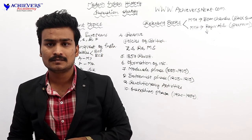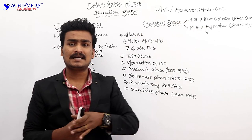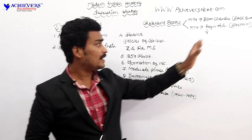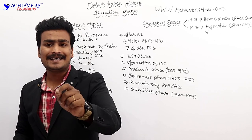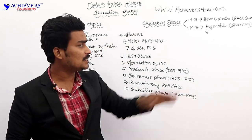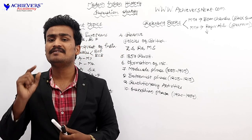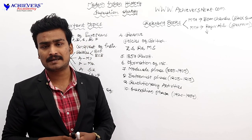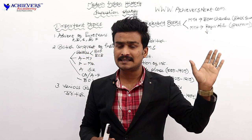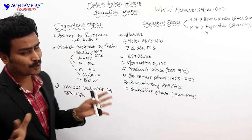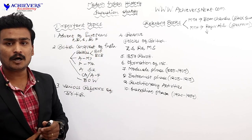Vipin Chandra is a large book of approximately 500 to 600 pages. After completing it and making notes from it, refer to Rajiv Ahir's book by Spectrum for further revision. The Spectrum book is very short, precise, and useful for revision — you can easily revise it. Covering these two books and the topics mentioned, you can solve 90 to 95 percent of Modern Indian History questions.